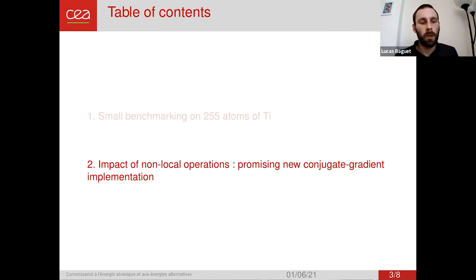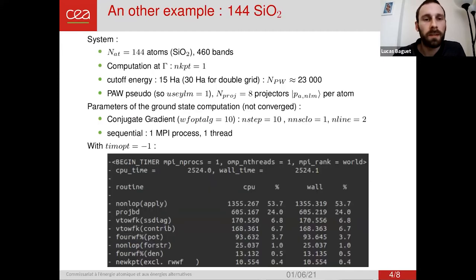OK, so now I'm going to talk about the impact of non-local operations on computation with big systems. So here the system is again with many atoms, which is 144 atoms of SiO2. I use 460 bands. Computation is done at gamma only. And we have 23,000 plane waves as a basis set.